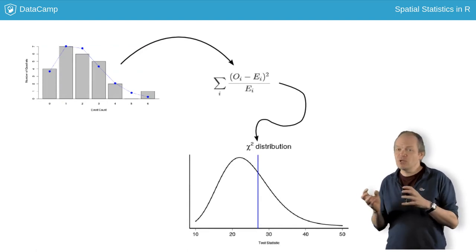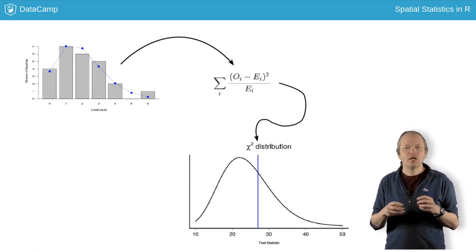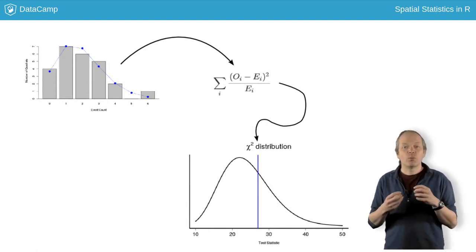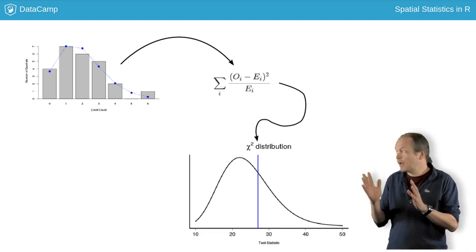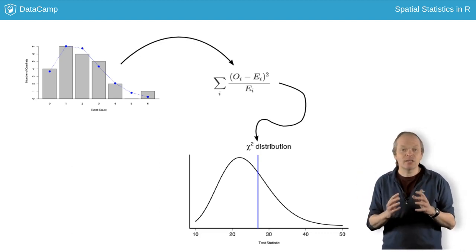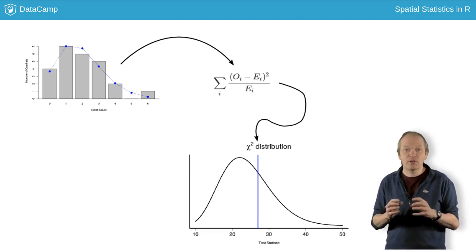The differences between observed counts and expected counts lead to a test statistic with a chi-square distribution, and large or small values of that test statistic indicate deviation from complete spatial randomness.